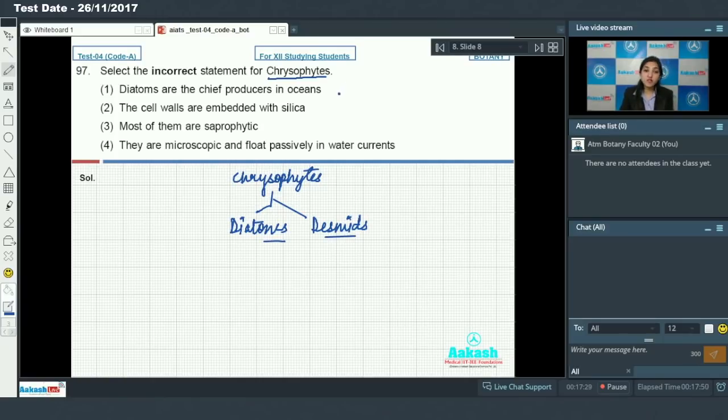Diatoms are the chief producers in oceans. This is correct. The cell walls are embedded with silica. This is correct. Cell walls of diatoms are embedded with silica due to which these siliceous shells are indestructible and they are responsible for the formation of diatomaceous earth. Most of them are saprophytic. No. They are photosynthetic.